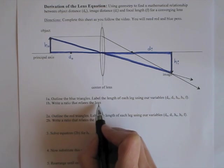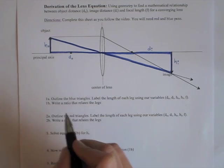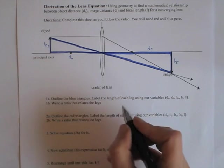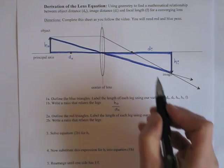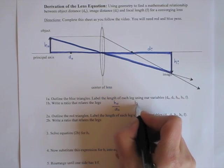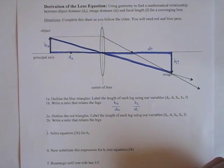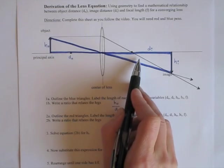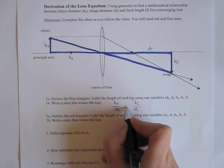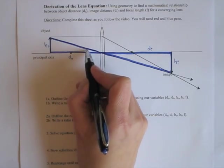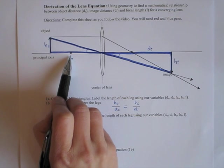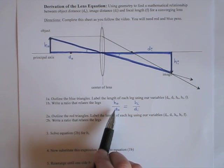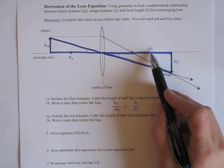Now we're ready to write a ratio that relates those leg lengths. Writing a ratio of the legs for the first triangle, we would have HO over DO. And writing a ratio for the lengths in the second triangle, we would have HI over DI. You have to use the corresponding leg when writing those ratios. Because these triangles are similar triangles, the ratios of their legs will be equal. Taking the side opposite the angle over the side next to the angle equals, for this triangle, the side opposite the angle over the side closest to the angle.